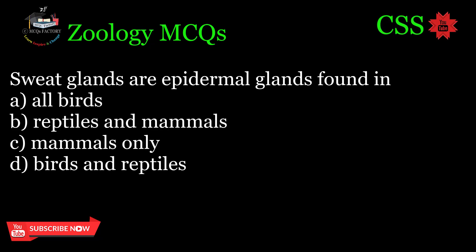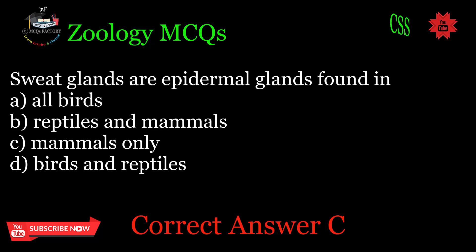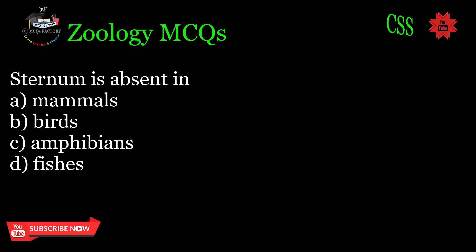Sweat glands are epidermal glands found in: A. All birds, B. Reptiles, C. Mammals only, D. Birds and reptiles. Correct answer: C.